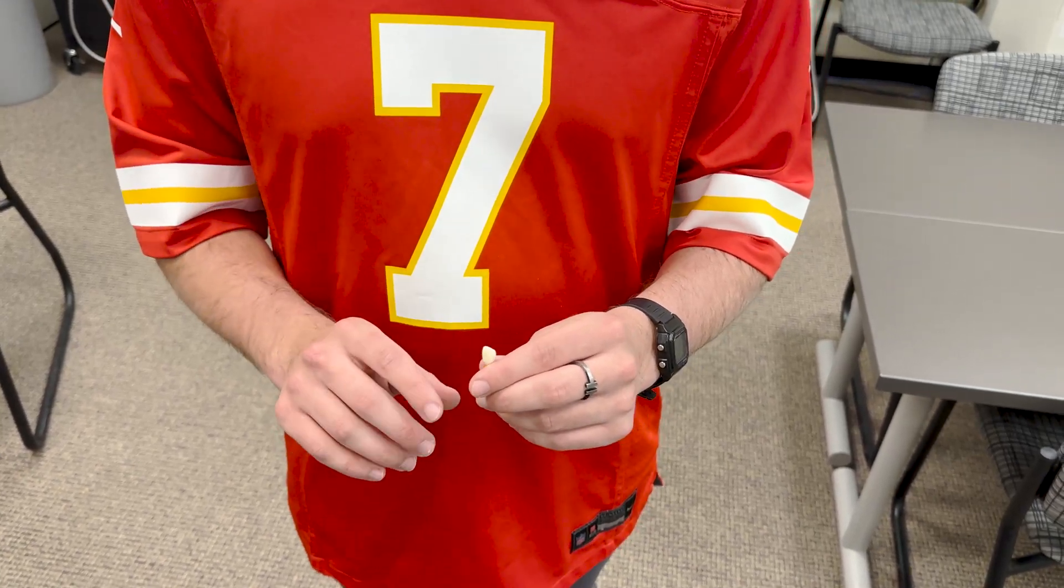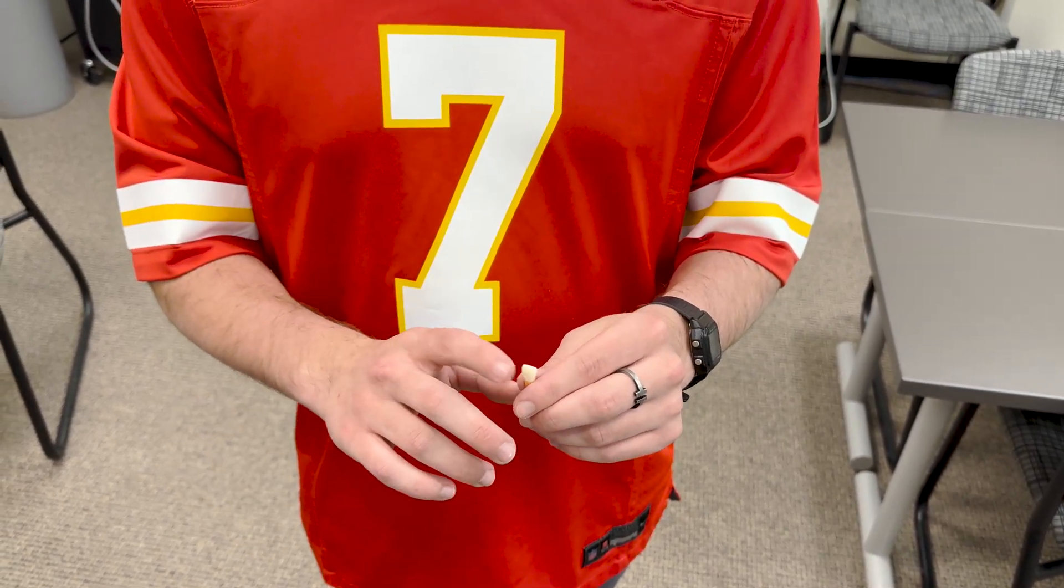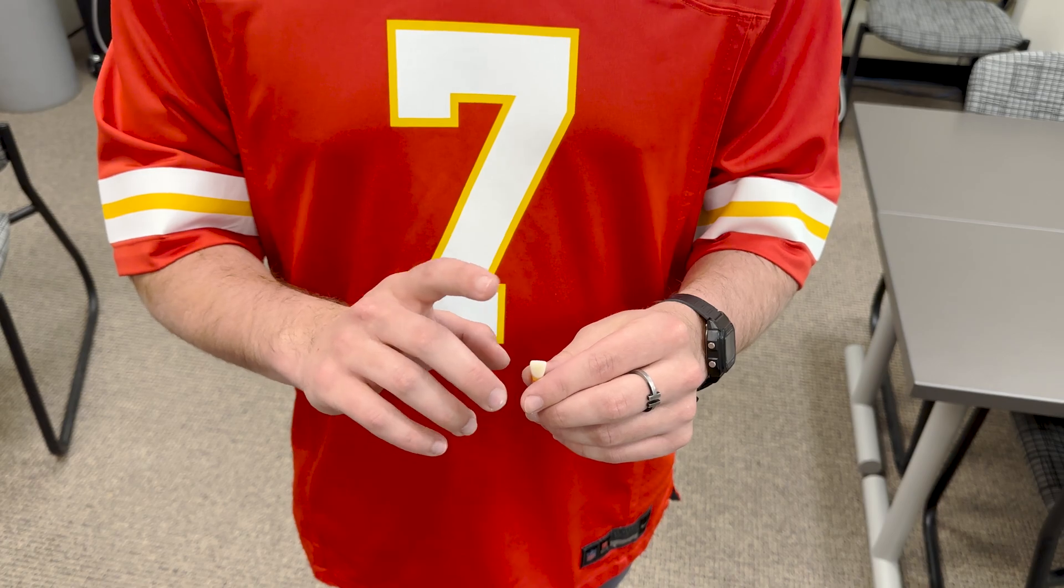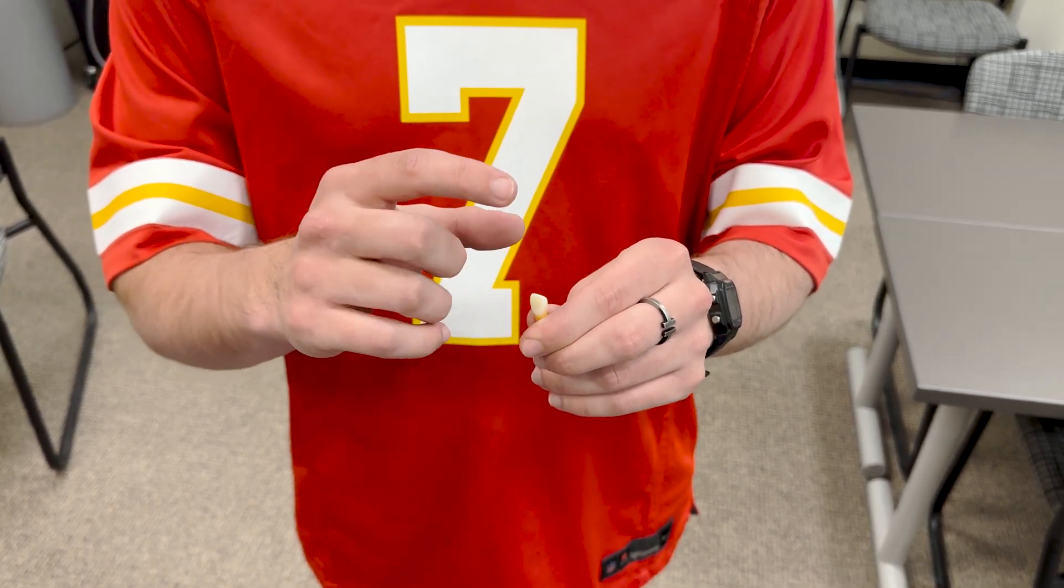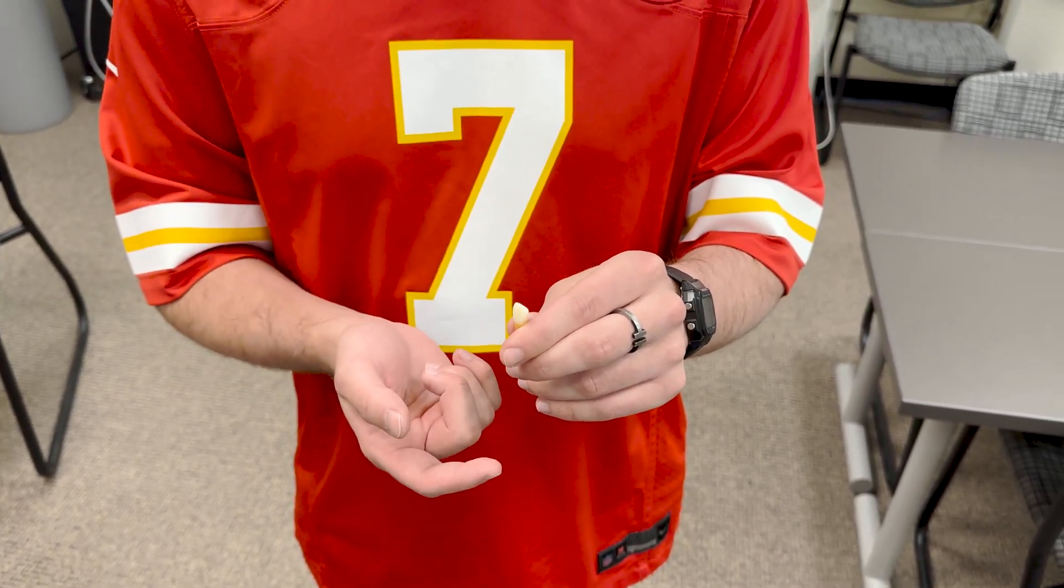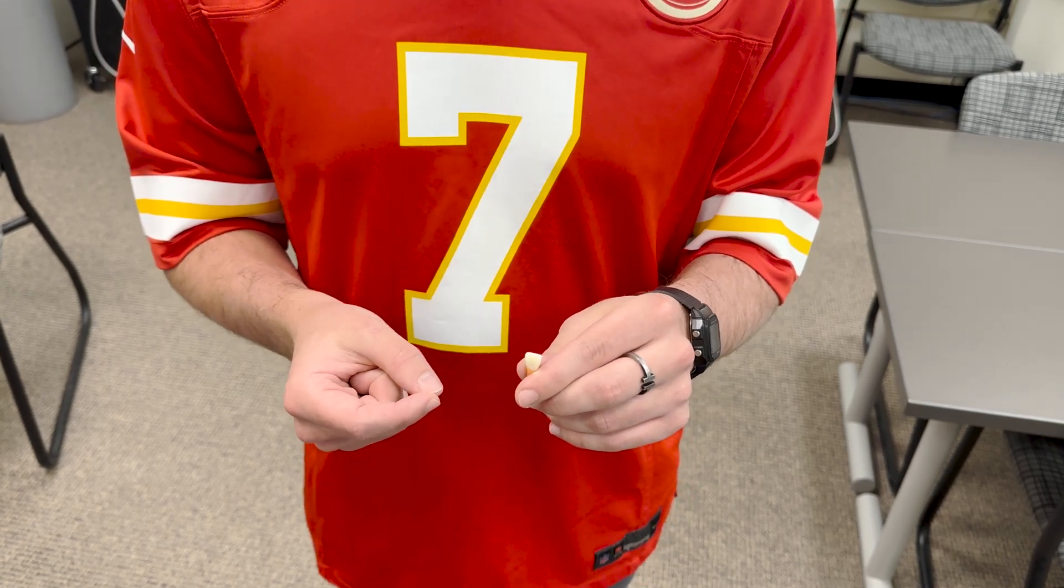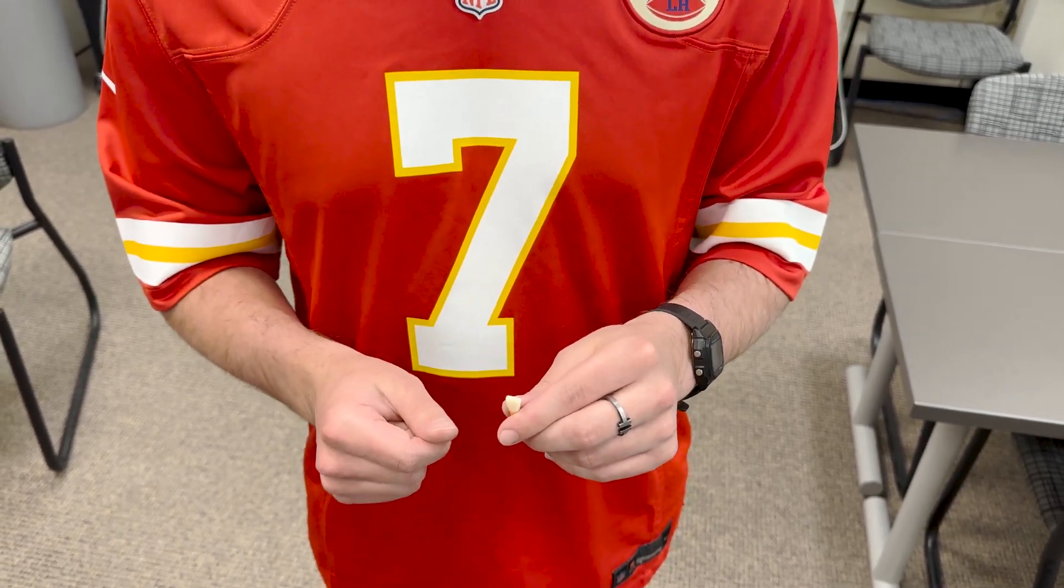The first thing you want to do before you mount your teeth is take your extracted teeth or plastic teeth and measure from the tip of the crown all the way to the apex. Make sure you write down that number because it'll come in handy when you're doing your root canals.